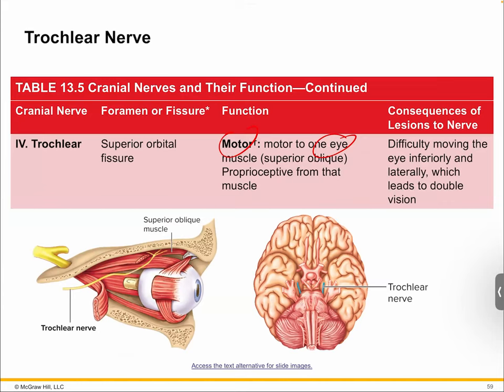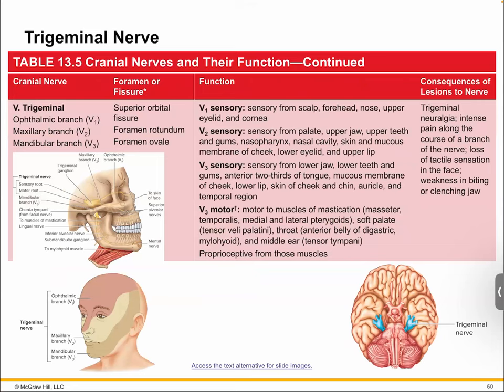Trochlear is also a motor one — you're looking at the superior oblique muscle. Because you have to be able to move your eyes in all three dimensions: up, down, side to side, and at an angle, to give you maximum visibility. You have a lot of muscular controls, and cranial nerves are controlling some of those. Trochlear is a motor nerve.